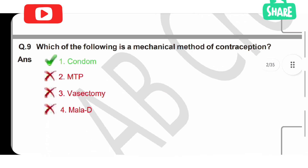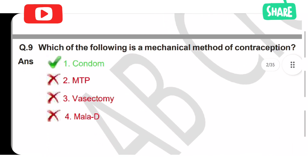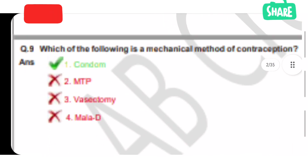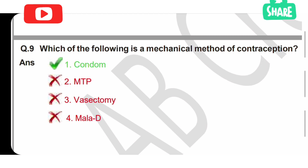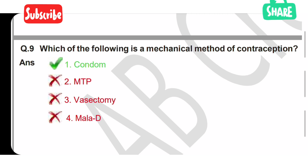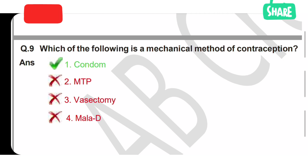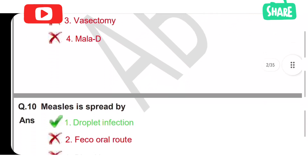Ninth question: which of the following is a mechanical method of contraception? Option 1 is condom, Option 2 is MTP, Option 3 is vasectomy, Option 4 is malady. The correct answer is condom — it is a mechanical method of contraception.